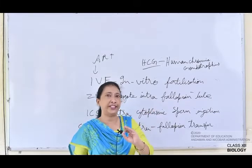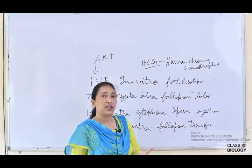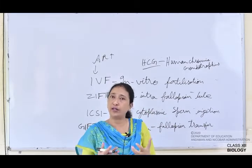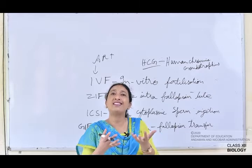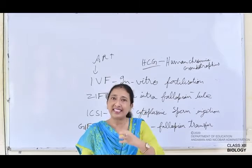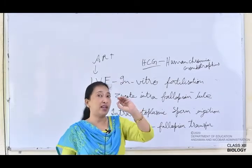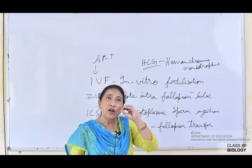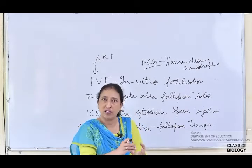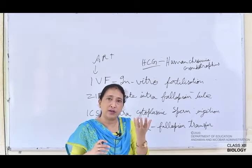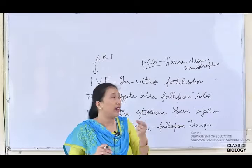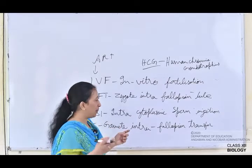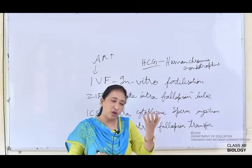When HCG is injected in a healthy female, she will produce more eggs. These extra eggs are harvested and transferred to the ampulla-isthmus junction of the fallopian tube of females who are unable to produce healthy ova. Sometimes the fimbriae is unable to catch the ovum from the ovary, so in GIFT the ovum is provided and implanted in the fallopian tube.